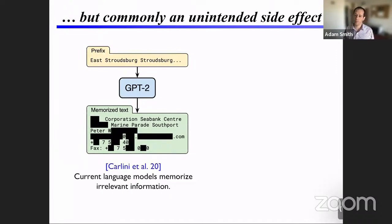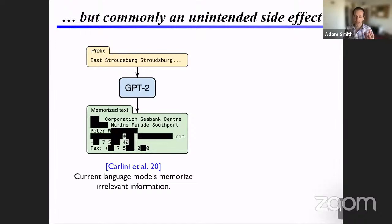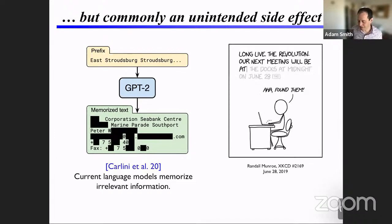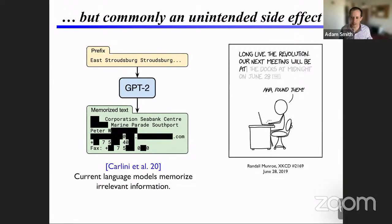Often memorization is an unintended side effect of learning. A striking example came in a paper a couple of years ago where Nicholas Carlini and others showed that GPT-2, a large language model, has encoded in its parameters explicit substrings of its training data — including exact addresses — even though these strings are not really about language learning. If you poke and prod the model, you can get it to produce these chunks of training data verbatim.